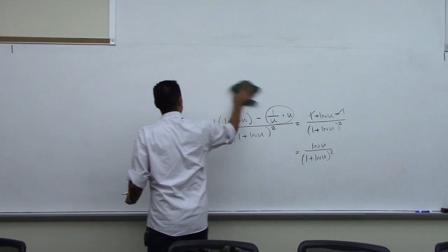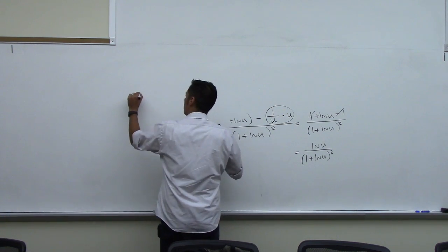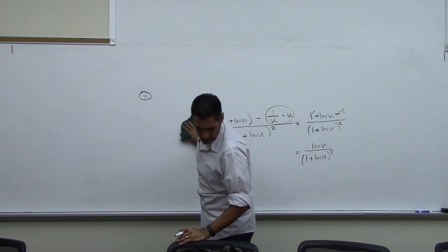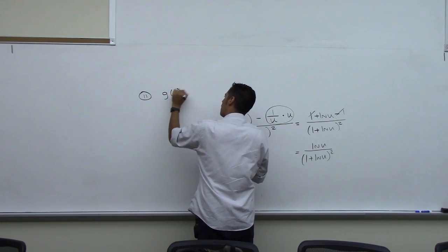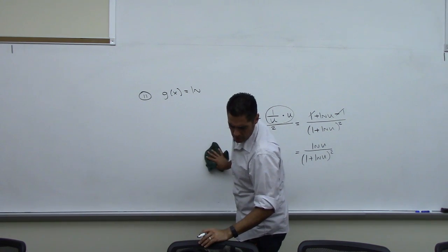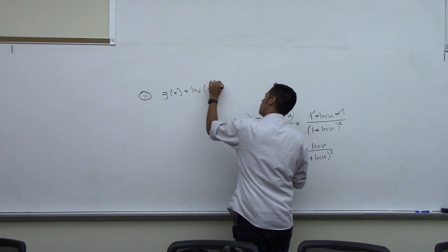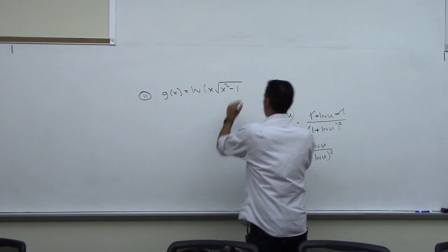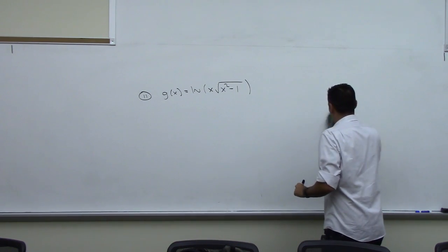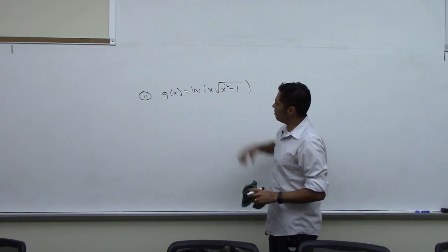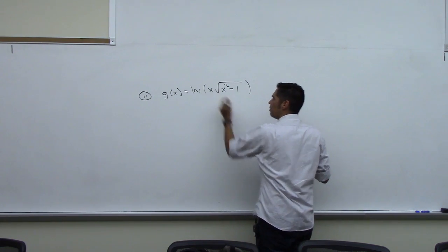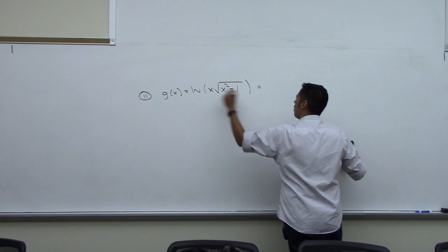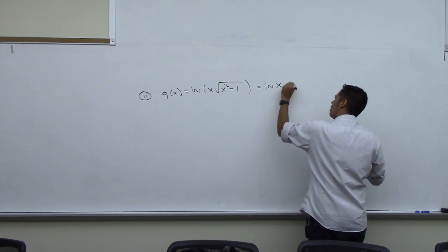Alright, number 11. We have g of x equals natural log of x times square root of x squared minus 1. We've got a lot going on here — chain rule, log, and stuff inside the log. I do notice there's multiplication here. I could split this into two logs and I think I'm going to do that, so I'll do some algebra first. Multiplication inside of a single log turns into two logs with addition between them.